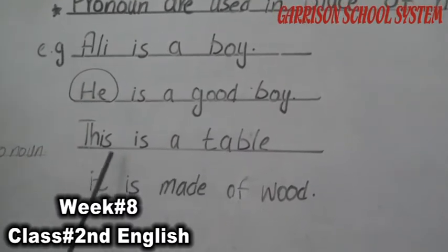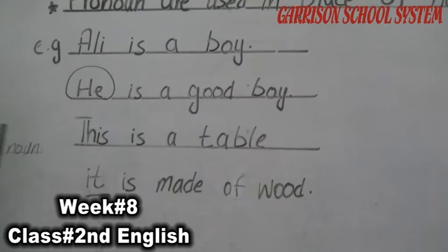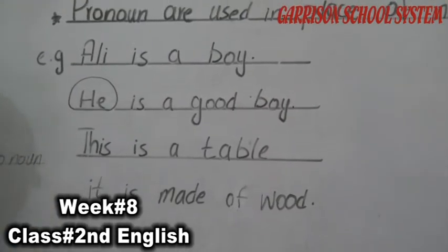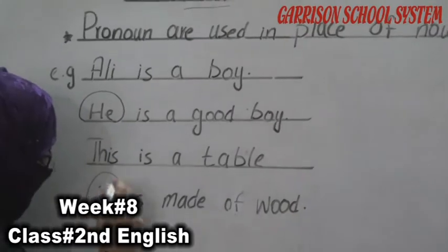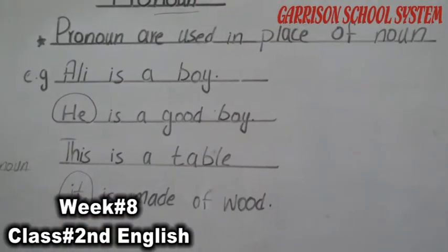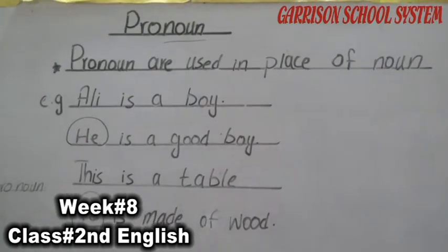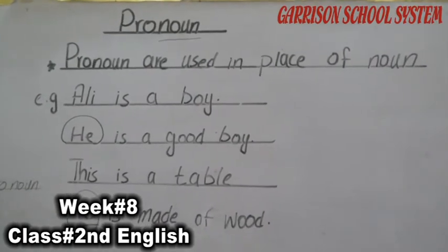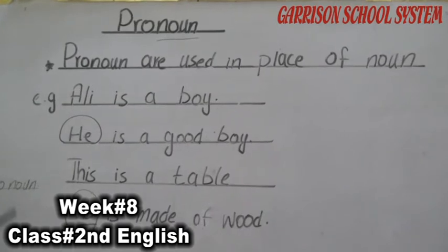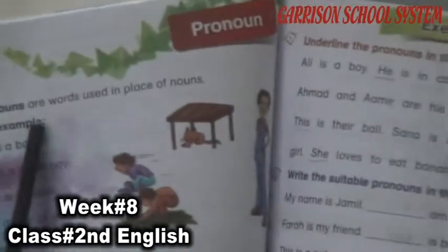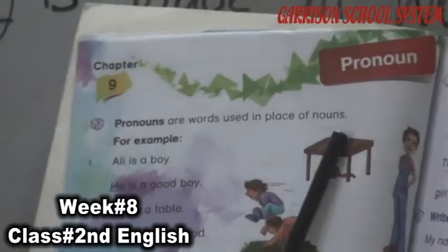'It is made of wood.' It means we use the word 'it' for the noun — the replaceable, changeable word used for the noun is known as the pronoun. Now open your book page number 20. They have given you the complete definition: pronouns are words used in place of nouns.